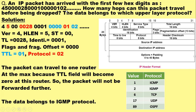We are supposed to determine the number of hops which the packet can take, and to which upper layer protocol the data belongs. For such examples, first write the given hexadecimal dump in a manner that allows you to identify the fields of the IPv4 header.